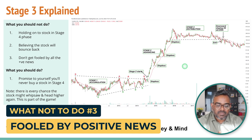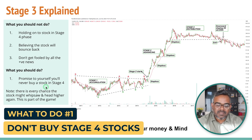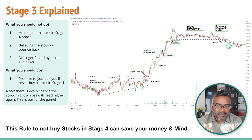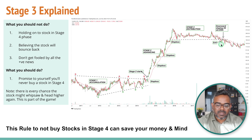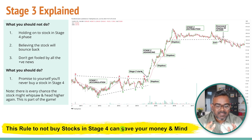Don't get fooled by all positive news. Promise yourself that you will never buy a stock in Stage 4. Take an oath that you will never buy a stock after it breaks down from a higher high, higher low structure and enters a downtrend. This is very important so that you don't lose much money. Remember, this entire Stan Weinstein concept is not a foolproof strategy — it's quite possible a stock comes down and then rises due to other factors, but the rule of not buying stocks in Stage 4 can save a lot of your money and stress.